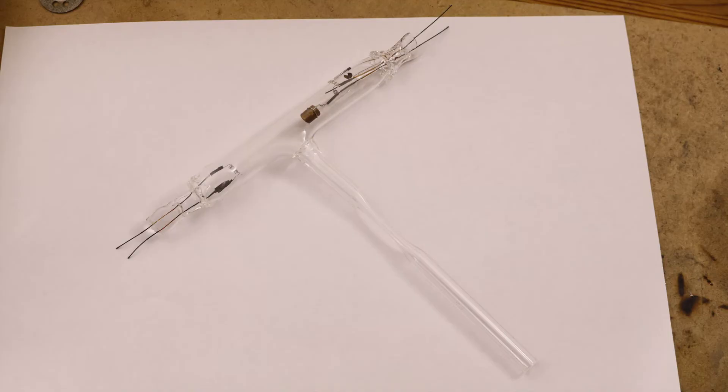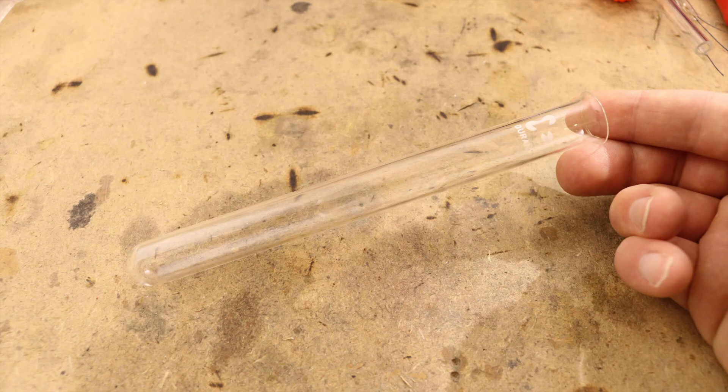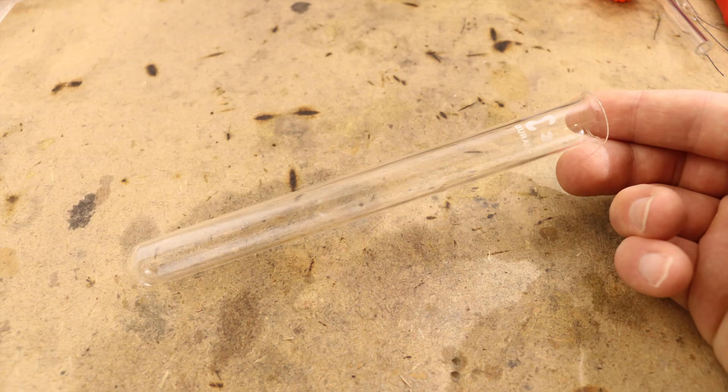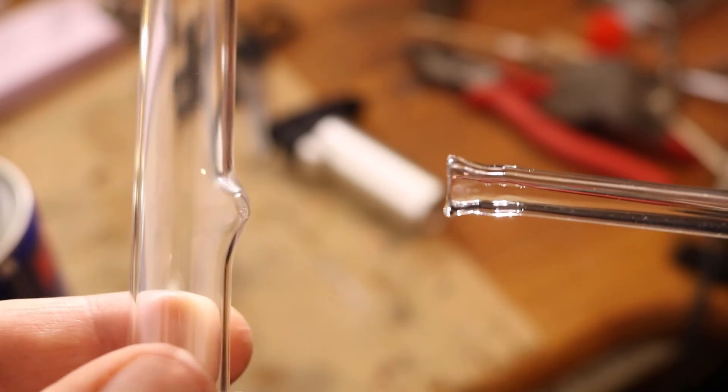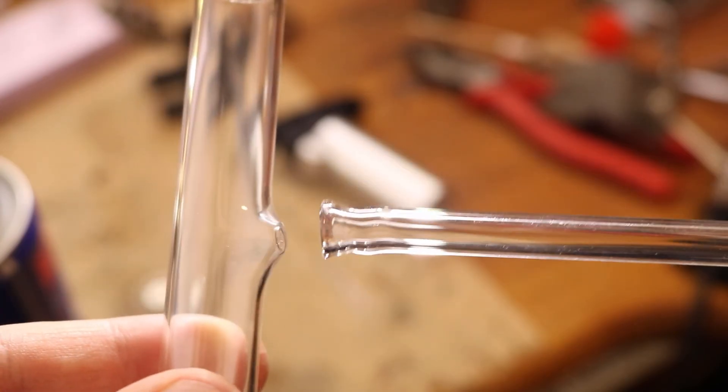Now everything just has to be assembled. Like said, the x-ray tube is made from a test tube. I cut off the bottom and melted an opening into the side to attach the evacuation stem.